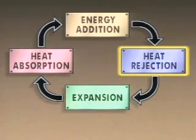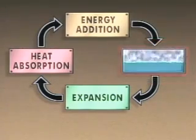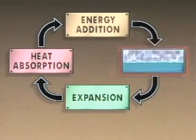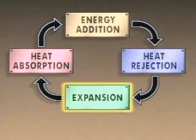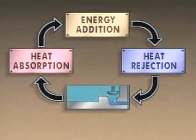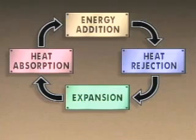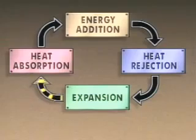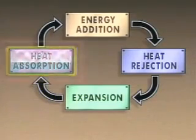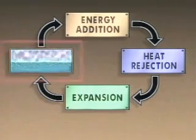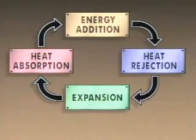After the energy addition step, the high pressure, high temperature vapor goes through the heat rejection step. In the heat rejection step, the refrigerant rejects the heat it absorbed in the heat absorption step and changes from a high temperature vapor to a low temperature liquid. In the expansion step, the liquid refrigerant is allowed to expand rapidly, causing the pressure to drop. When the liquid's pressure drops, its temperature also drops, leaving a low pressure, low temperature liquid ready for the heat absorption step. The refrigerant again absorbs heat from the heat source, changes to a vapor, and the cycle continues.